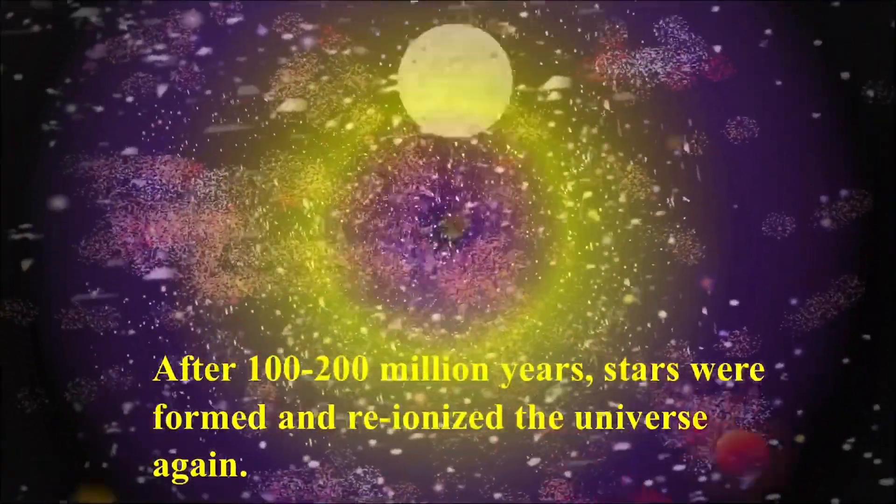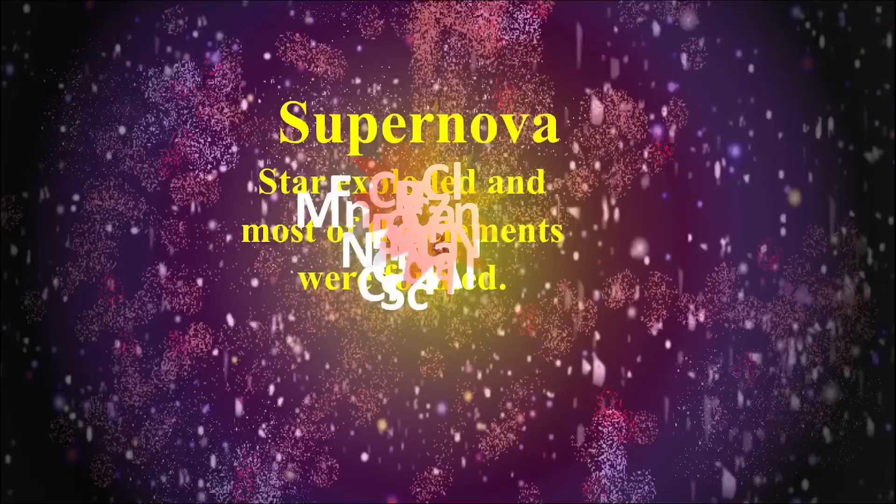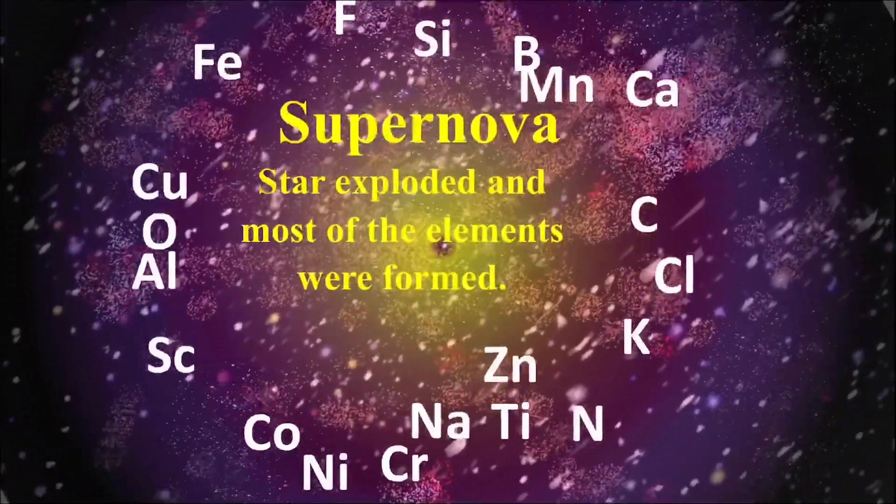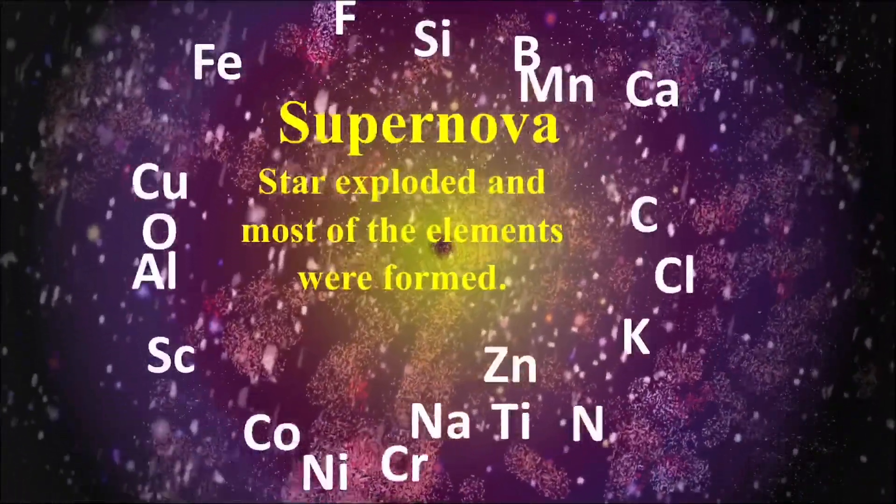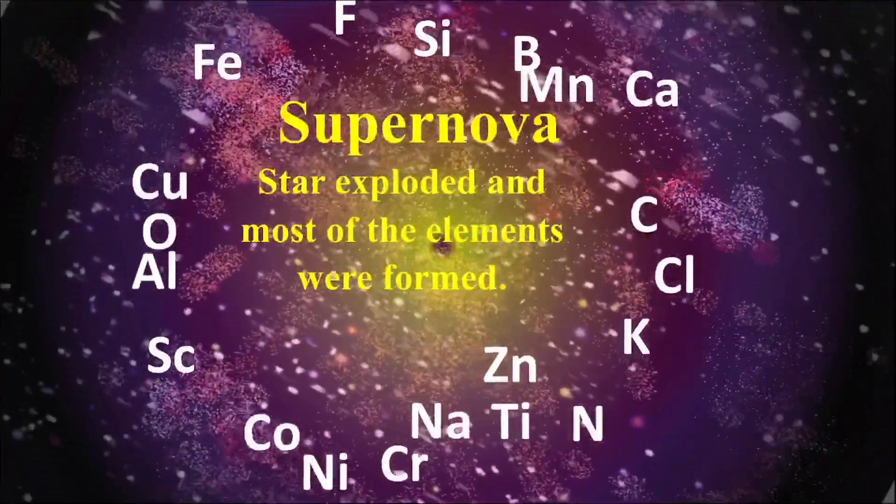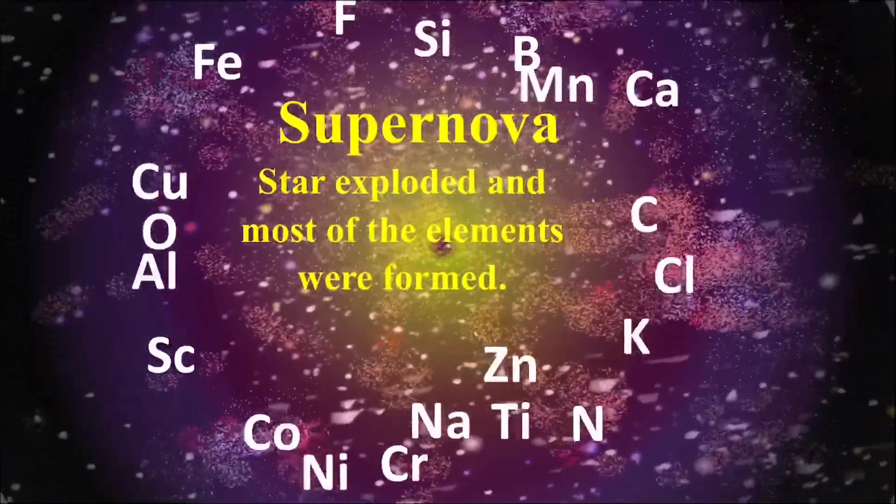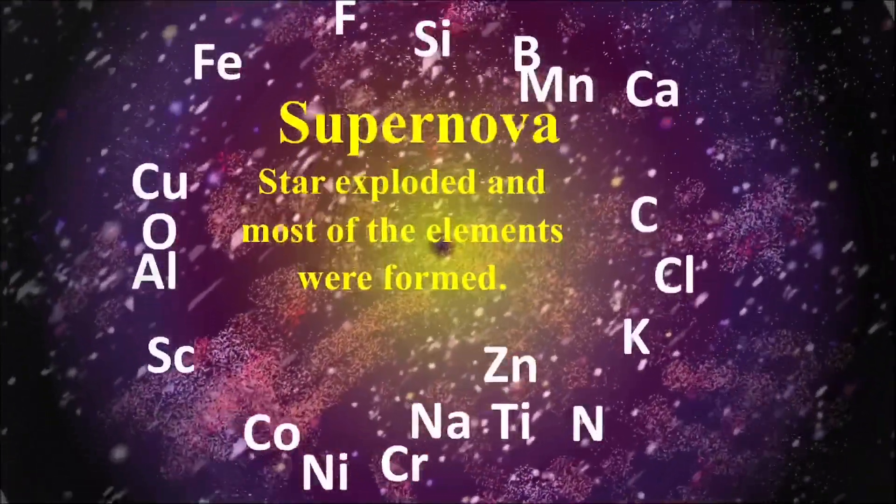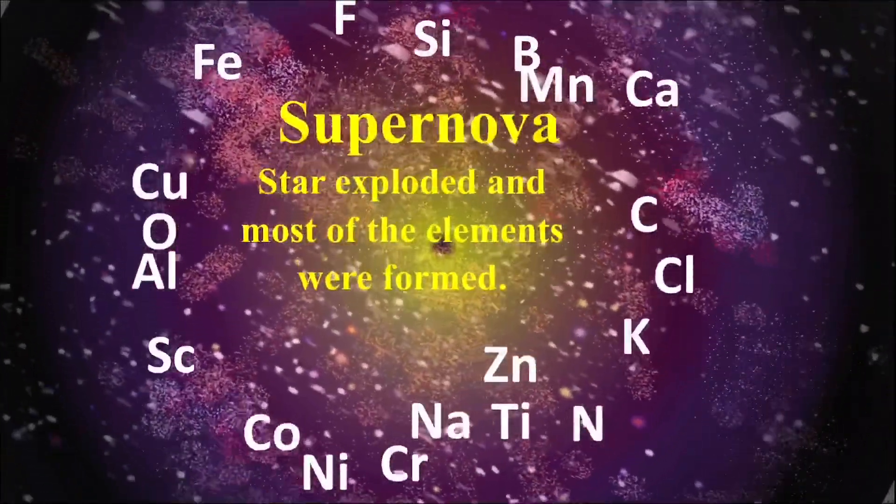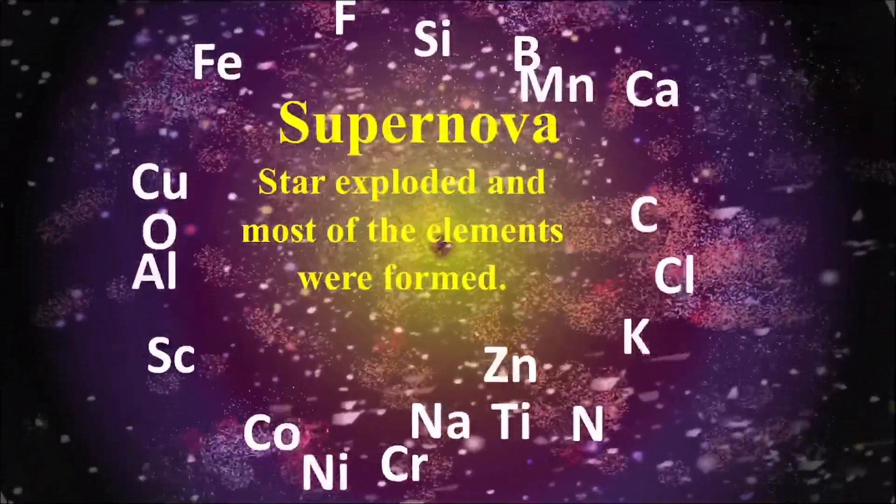However, in an event, certain stars exploded again, and this phenomenon is called supernova. During this explosion, elements like carbon, nitrogen, oxygen, silicon, magnesium, iron, and so on up through uranium were spread throughout the universe. Then all elements, gas, and dust combinedly formed a giant rotating cloud. This was the initial stage of forming the solar system.